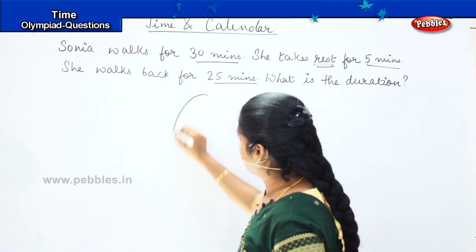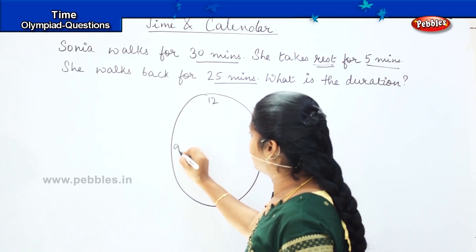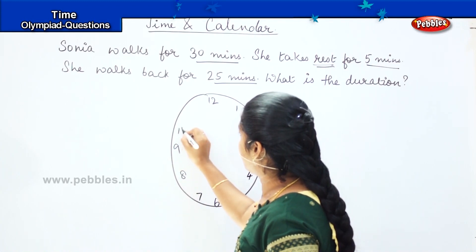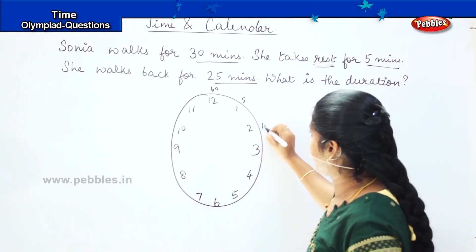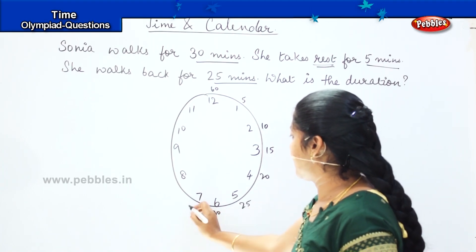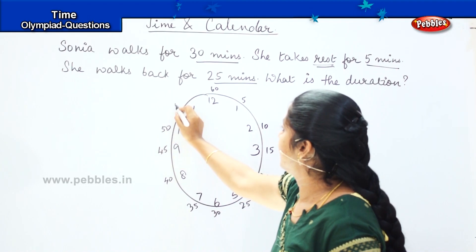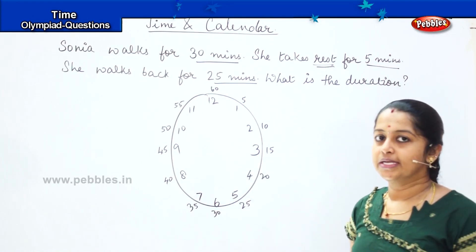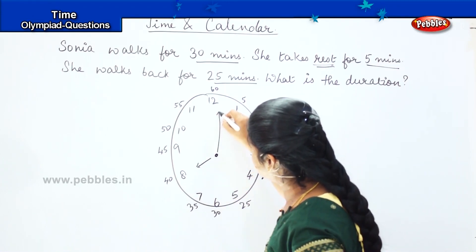So what we have to do is draw a clock again with 12, 6, 3, and 9, and then we will mention the numbers in between, and shall we mention the outside numbers as well — 5, 10, 15, 20, 25, 30, 35, 40, 45, 50, 55, and 60. Assume that she starts walking at morning 8 o'clock. So we will draw the small hand in 8 and the big hand in 12.